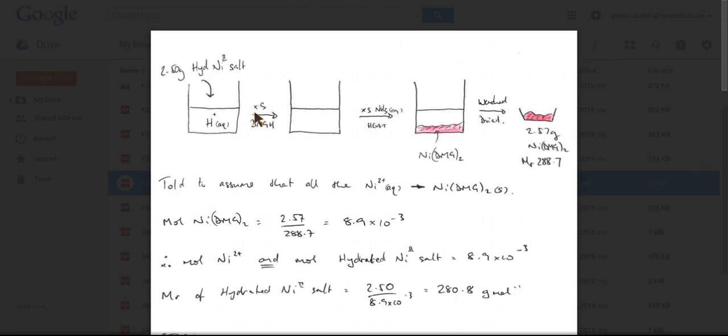That's dissolved in excess DMGH. They then add excess ammonia and they heat it. And we get this red precipitate, this red solid produced, NIDMG twice.